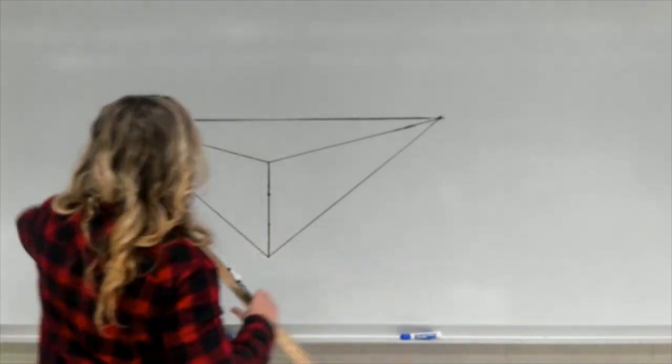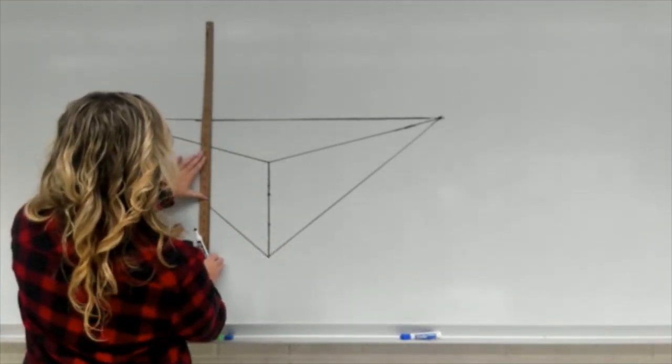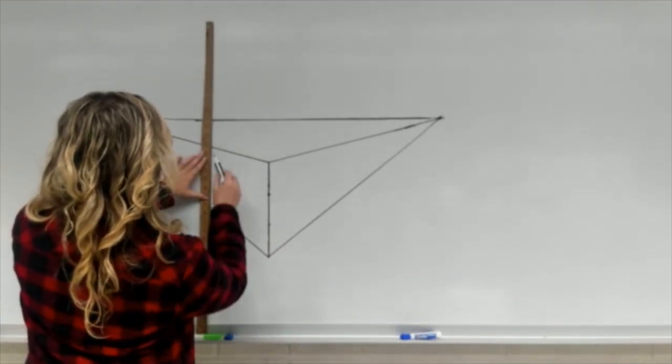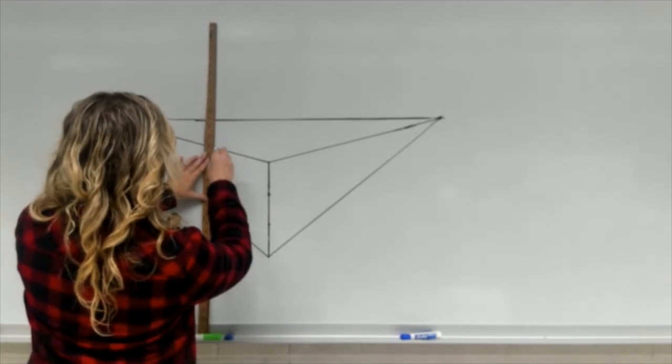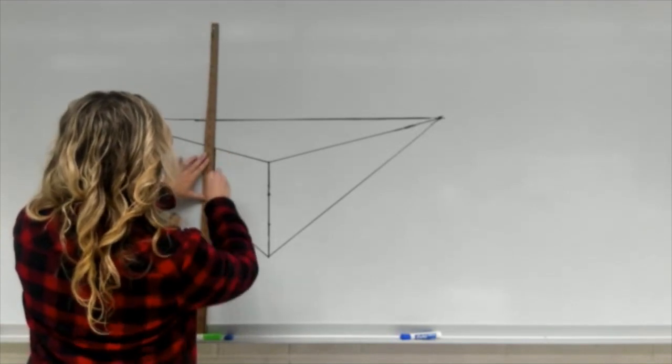First you're going to draw your eye level and start the two-point box, and then finish the two-point box how you think it should look.